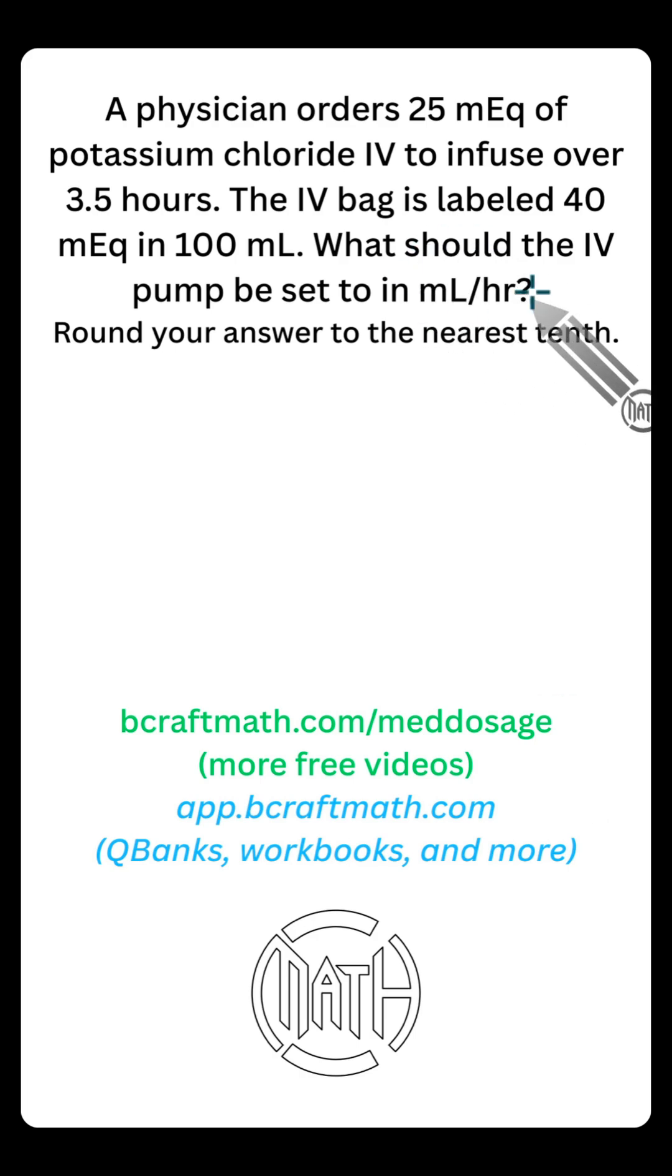This problem's reversed. Our goal here is milliliters per hour. In this goal, milliliters is our top word, so I'm going to start with milliliters at the top of my first fraction. Let's hunt for this word milliliters in our problem. Our problem states in 100 milliliters, there are 40 milliequivalents. That's where I'm getting this fraction from. I'm putting the 100 milliliters at the top because milliliters is the top word of our goal.